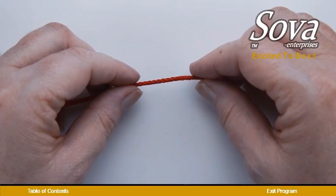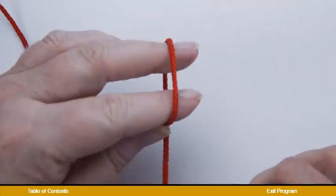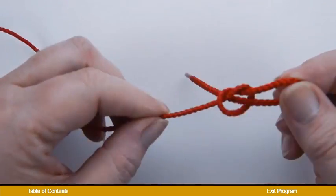All right, we're going to do a slip knot. You've got your thread. You wrap it around your fingers and then you pull the thread through the loop.